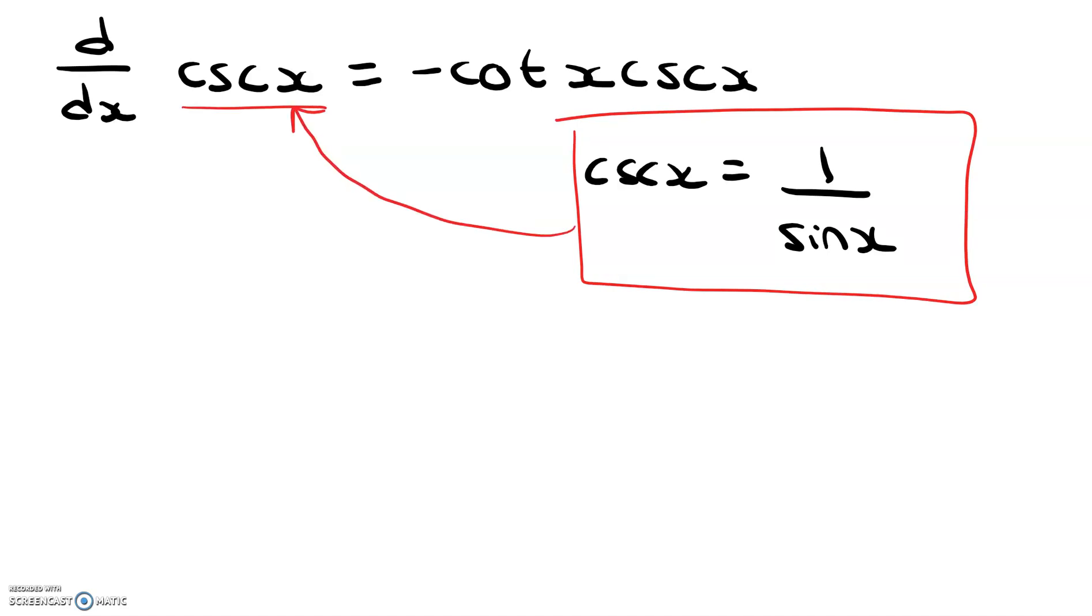We're going to start off by making a substitution as well. We're going to sub this in for cosecant x. So we're going to sub in 1 over sine x. Alright, so d dx of 1 over sine x. Again, we're trying to prove that that is equal to negative cotangent x cosecant x.